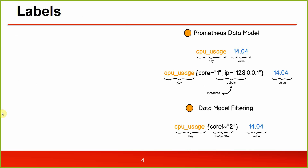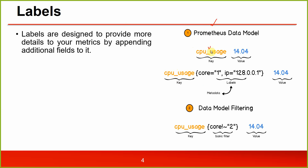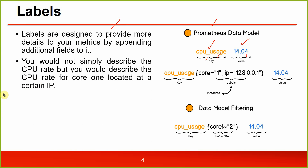To give more details about your metrics — such as when your CPU has four cores and you want four separate metrics for them — this is where the concept of labels comes into play. Labels are designed to provide more details to your metrics by appending additional fields. You would describe the CPU rate for core one located at a certain IP. Whatever is given in curly braces is called a label, with values like core=1 and IP=some address. Labels are metadata.